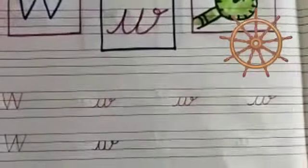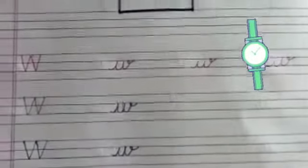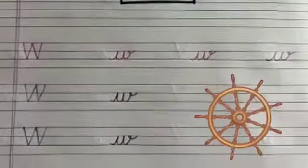W. W for watermelon. Again, in the next line, make the formation of U. Come down. Go up. Make a small curve. W. W for V.